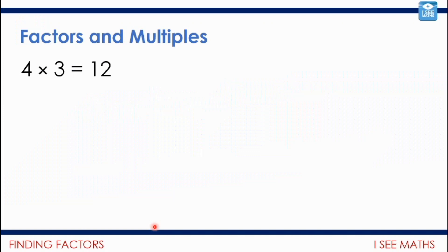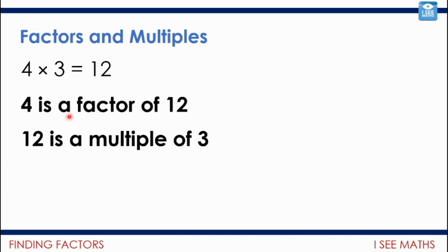First of all, factors and multiples. So four times three is 12. So this means that four is a factor of 12. 12 can divide evenly and leave four. So four is one of the factors of 12. And 12 is a multiple of three. So if three is multiplied, you get up to 12. So 12 is one of the multiples of three. So there's a definition, or examples I should say, of a factor and of a multiple.